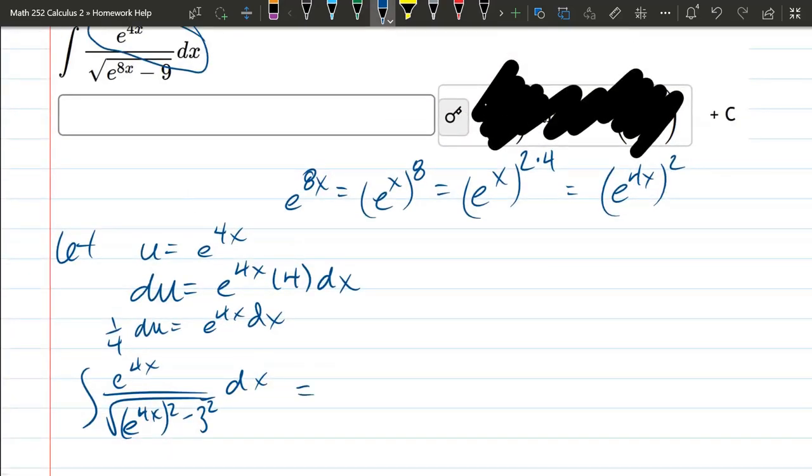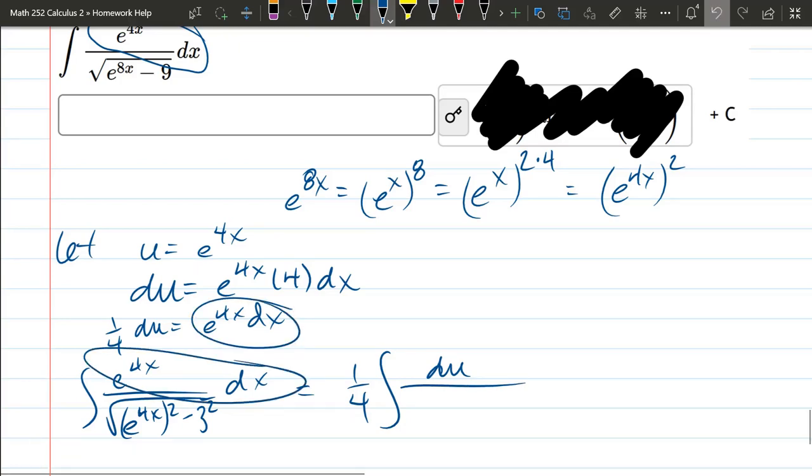And now, we're going to make the u sub. So, we get the 1/4. The entire numerator just becomes du, because e to the 4x dx is 1/4 du. And then, we have square root, u squared minus 3 squared.